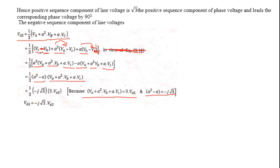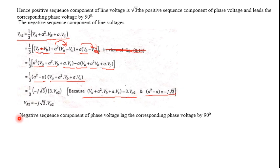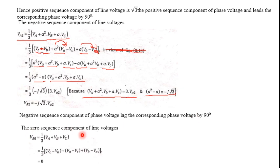So the negative sequence component of the line voltage is root 3 times the phase voltage, and it lags the corresponding phase voltage by 90 degrees. For the zero sequence component, VA0 = (1/3)(VA + VB + VC). Substituting these values, we get zero — there is no zero sequence component of the line voltage in a star connected system.